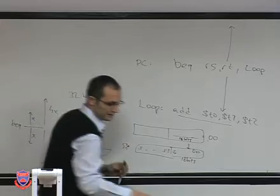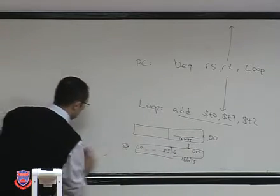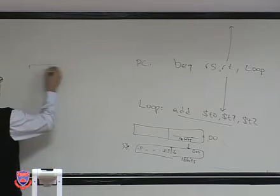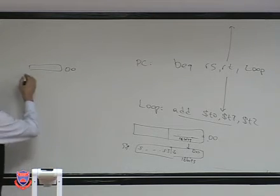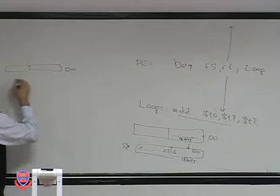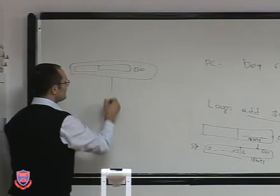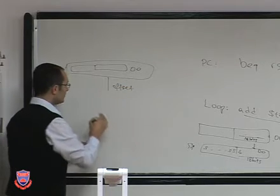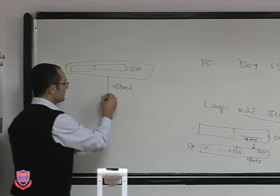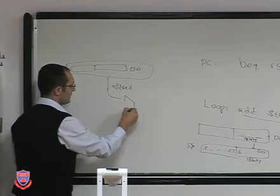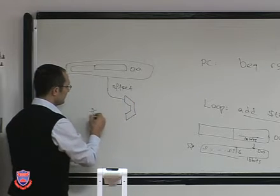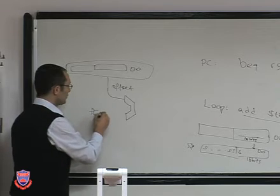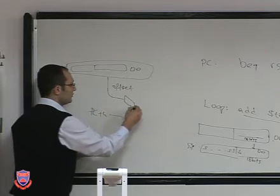So you take the 16-bit number with the two zeros appended at the end, sign-extend it to make a total of 32 bits, and then add this offset value to a base address. You add this offset to PC plus 4, and then you get the target address. This applies for branch instructions — BEQ, BNE, or whatever branch instruction you execute.